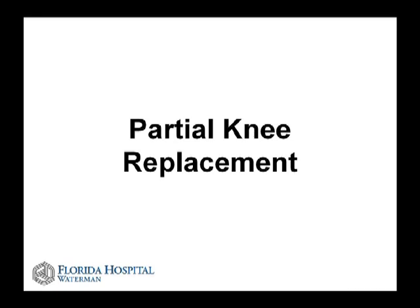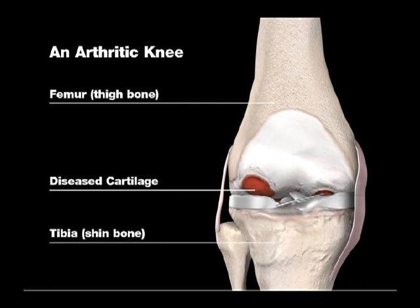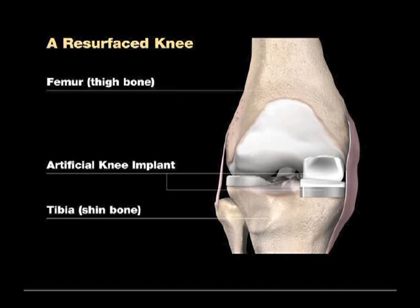Arthroscopy is one of the adjuncts we use to treat knee pain and meniscal tears. For someone that has severe arthritis in their knee that is bone on bone on one side, we can perform what we call a partial knee replacement. This is a schematic of somebody that has arthritis on both sides of their knee, but if the arthritis is isolated to one side, we can perform a partial knee replacement.